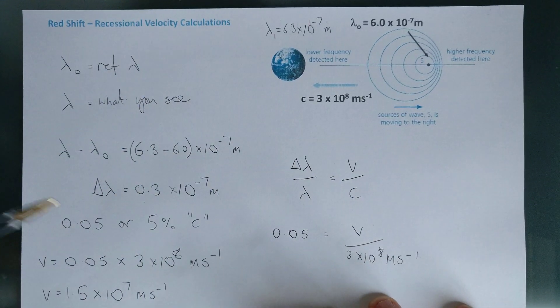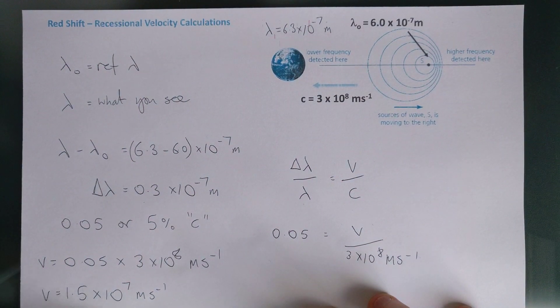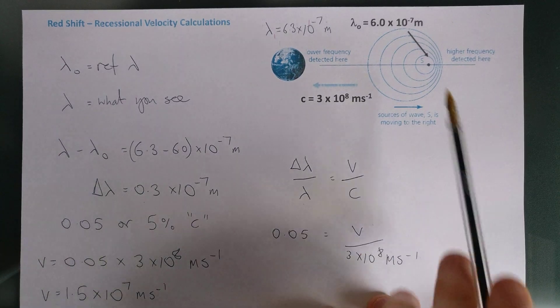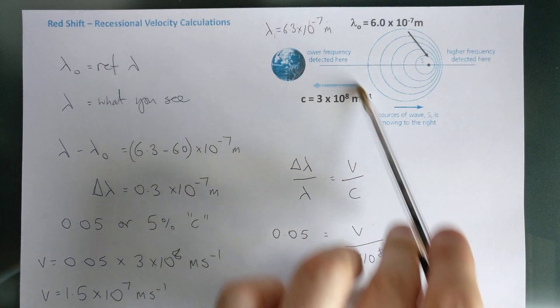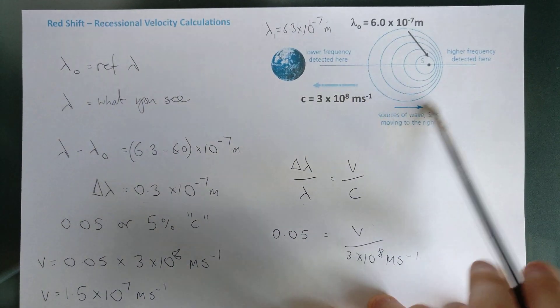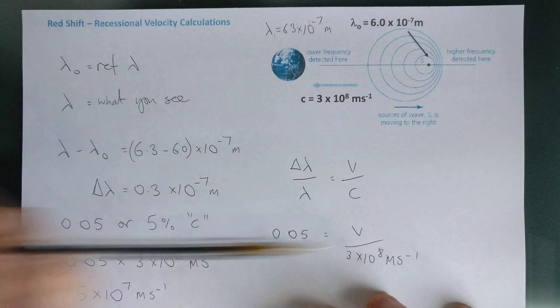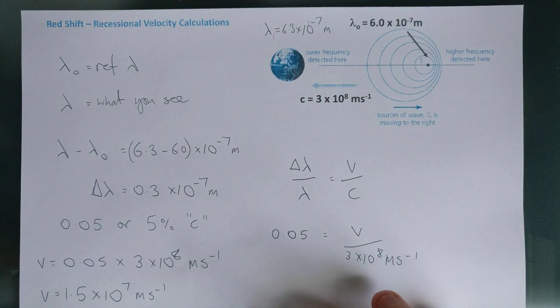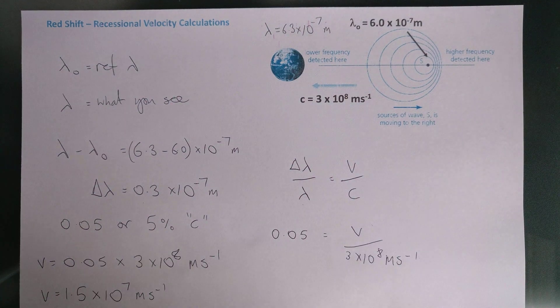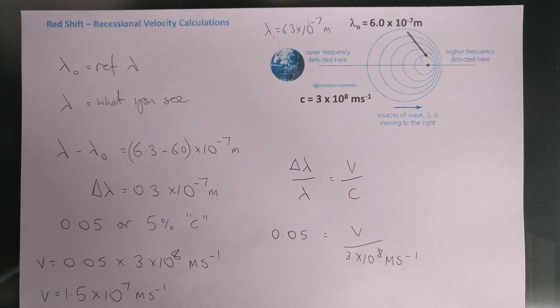So it's the same thing effectively, but what I've worked out there is that this galaxy, it could be a star but we often talk about galaxies really, it is moving away from us at that speed. And that is a typical calculation you would need to do. So thanks for watching and happy physics.